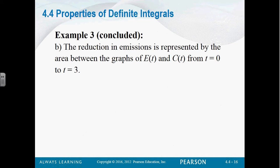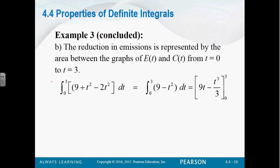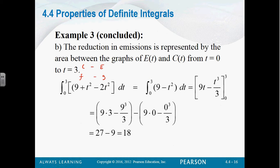The reduction in emissions is represented by the area between those graphs. Because the area under the graph of e is how much pollution is created by the new engine, and the one under c is the old one. So if we subtract those pollutions, we should get how much we've reduced emissions. We're going to integrate from 0 to 3, because that's the starting point to the point where they become the same. So we've got c minus e. When we integrate that, we get 9t minus t cubed over 3, evaluated from 0 to 3, which gives us 18.